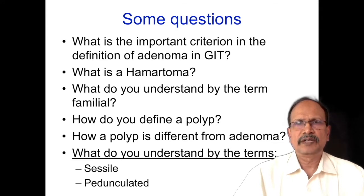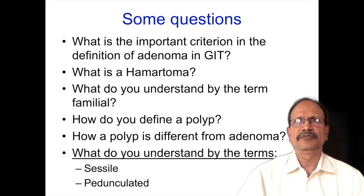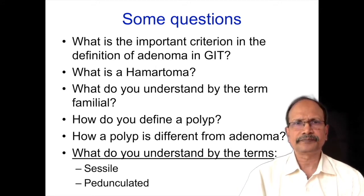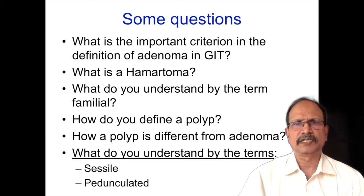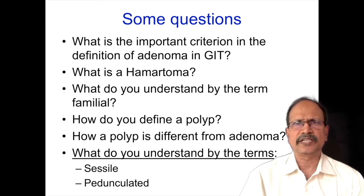What is a hamartoma? A hamartoma is a jumbled mixture of tissue which is native to the organ or the site. What do you understand by the term familial? It means something occurring in families or family members. Most probably it may be genetic, but it does not always have to be a genetic mechanism. Common sharing of food, habits, or location may also dictate some diseases.